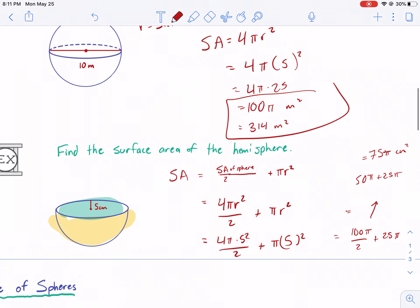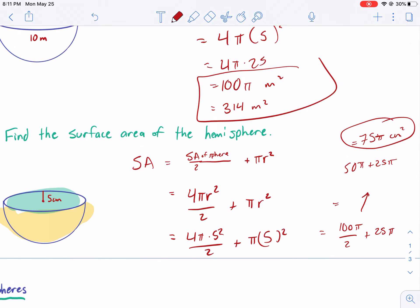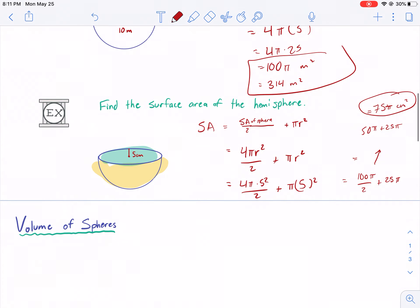If you wanted to multiply that out in a calculator, you could, but I'd like 75 pi centimeters squared. That's good enough for me.